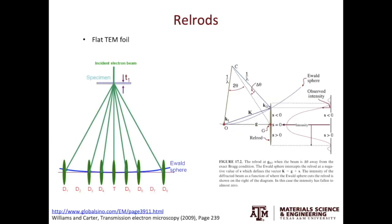You have seen this slide in one of the previous videos when we discussed the Ewald sphere. The foil is very thin, and assuming it is very flat, in reciprocal space we'll have the relrods which are perpendicular to the thin foil surface. When the Ewald sphere cuts the relrod at the very center, the intensity is the highest and there is no excitation error. When the Ewald sphere cuts off the center of the relrod, the intensity will be lower and we will have an excitation error.